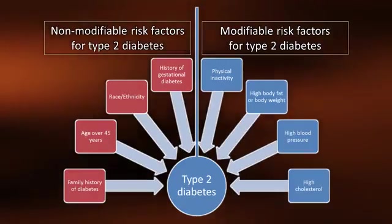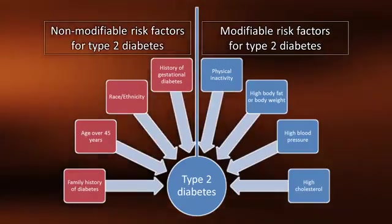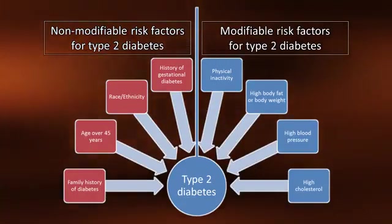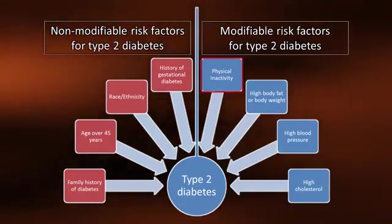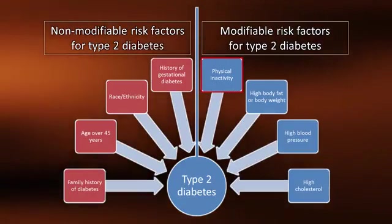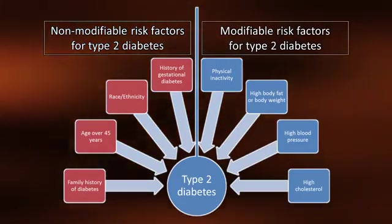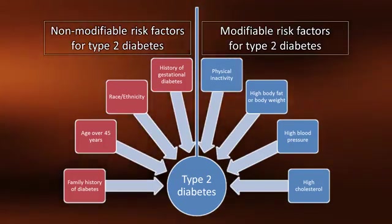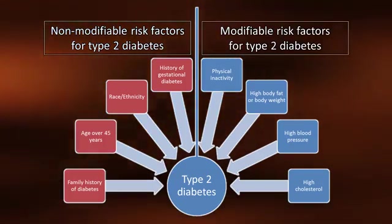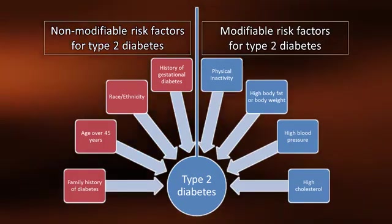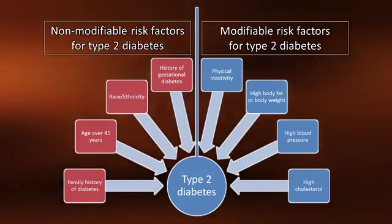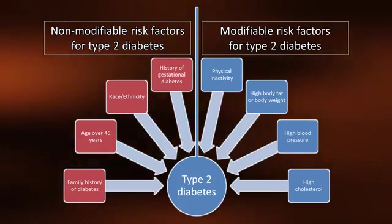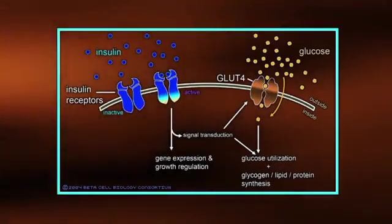When looking at the modifiable risk factors for developing type 2 diabetes, you will find physical inactivity at the top of the list along with obesity. Other modifiable risk factors include hypertension and elevated cholesterol levels. A family history of diabetes, ethnicity, and advancing age are other risk factors for developing type 2 diabetes.